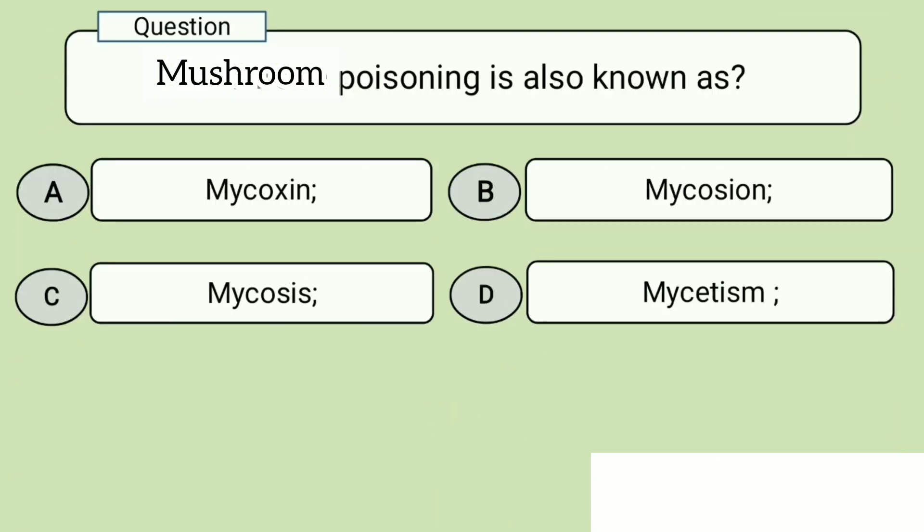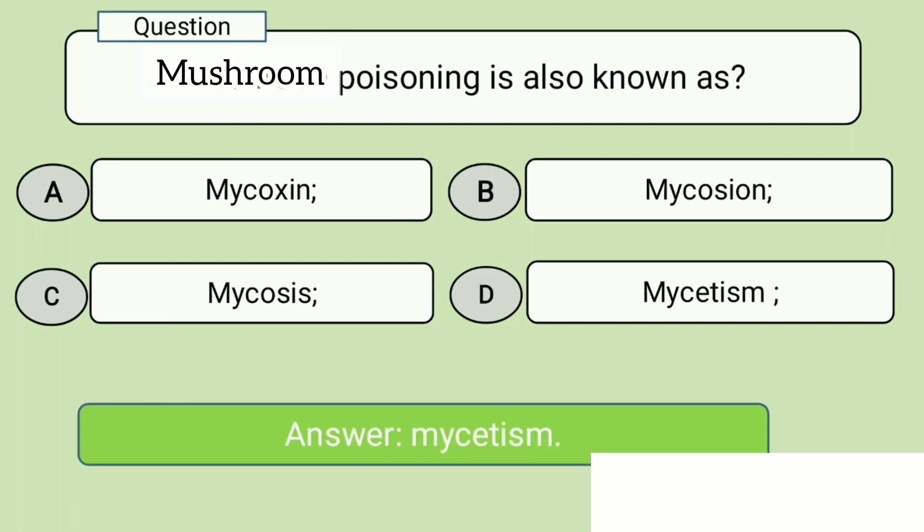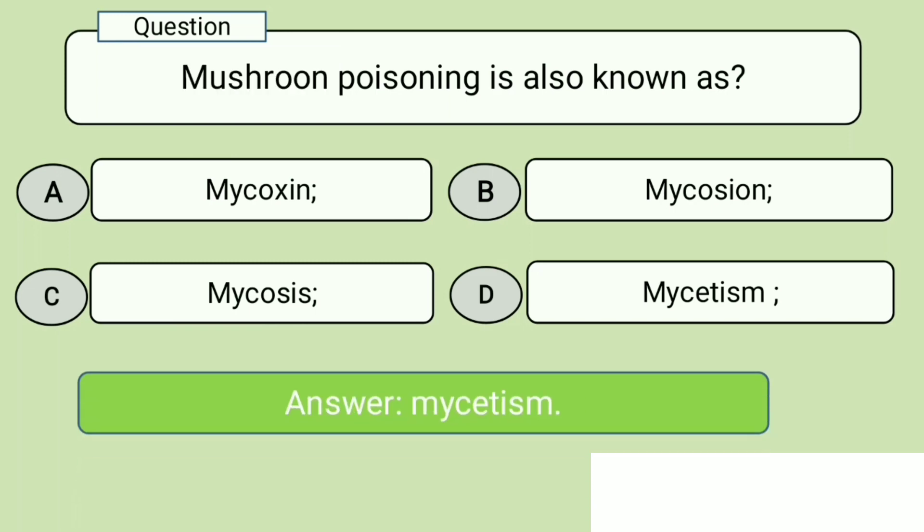Question 6. Mushroom poisoning is also known as. A. Mycotoxin, B. Mycosian, C. Mycosis, D. Mycetism. Answer: Mycetism.